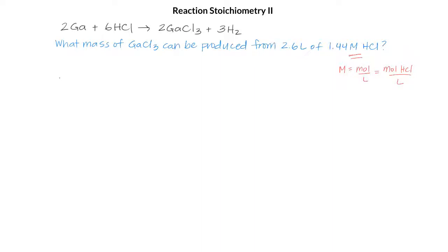We know that our HCl solution is 1.44 molar, and we can use our mole ratio once we have units of moles. So here we need to get rid of the liters on the bottom, which we can do because we know that we have 2.6 liters of this 1.44 molar solution. So our liters cancel.